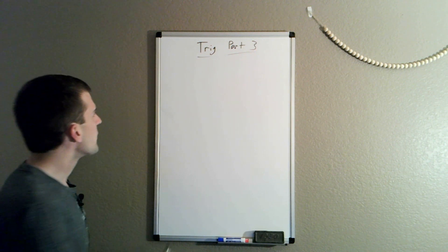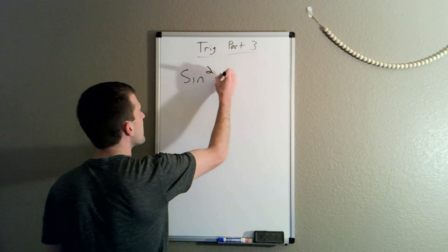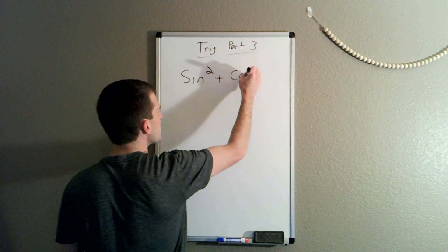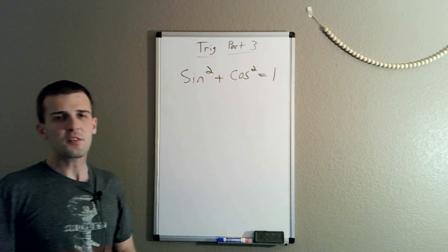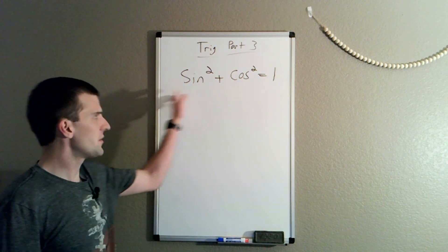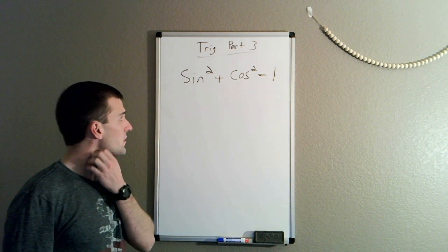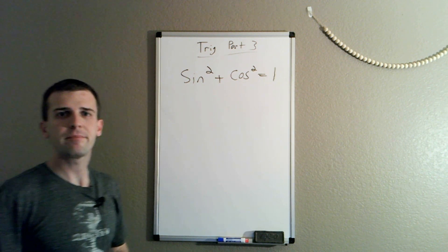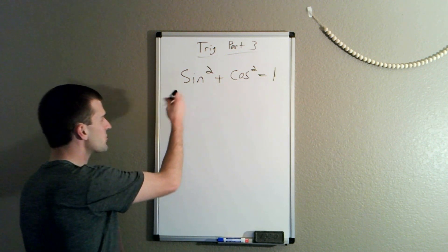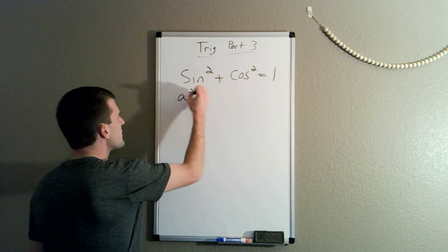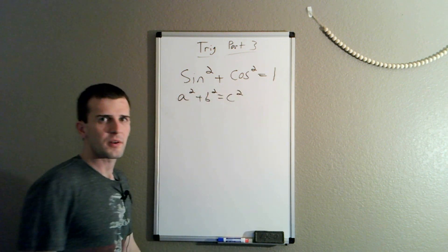We're going to start off with the one identity I think you should definitely memorize, and that is sine squared plus cosine squared equals one. I'm actually going to prove that this is true by rewriting it so it becomes the Pythagorean theorem. As a reminder, the Pythagorean theorem says for a right triangle: a squared plus b squared equals c squared.